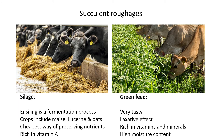Next are succulent roughages — succulent meaning wet. Unlike the dry hay bales previously discussed, succulent roughages still have good moisture content. The first example is silage, which involves a fermentation process. These are usually white bales wrapped in plastic and left to stand for a couple of months. The sun heats the bale through the plastic, and bacteria on the inside ferment the contents.